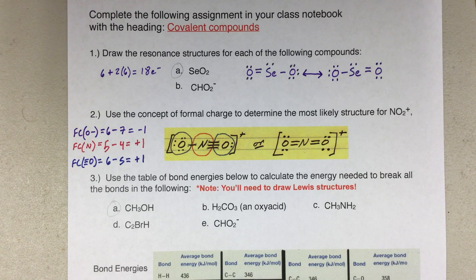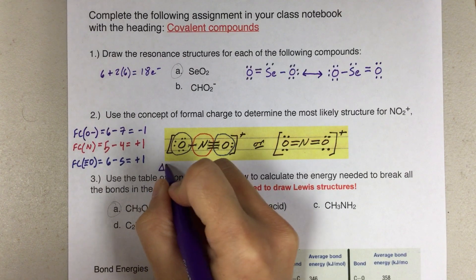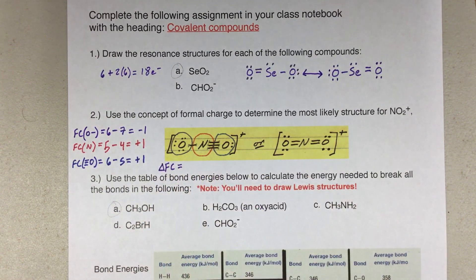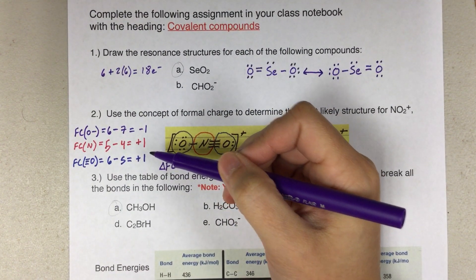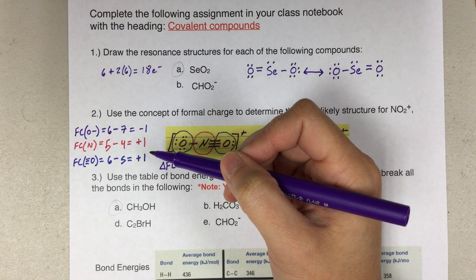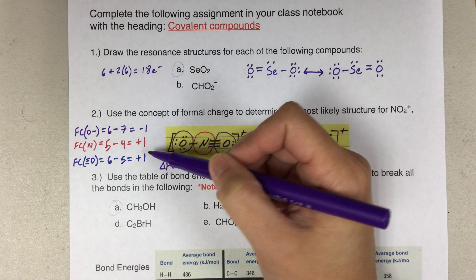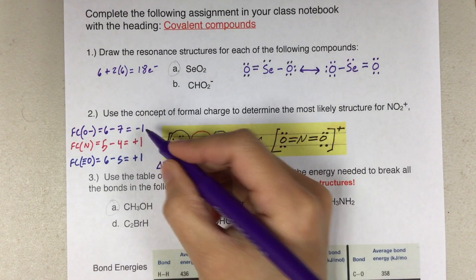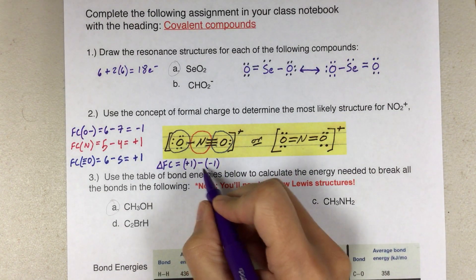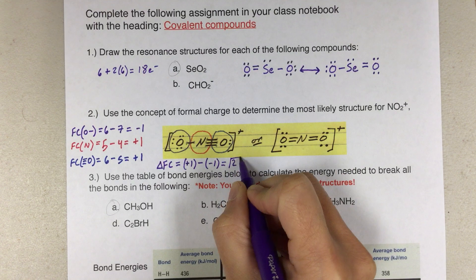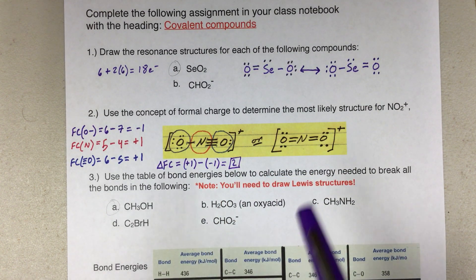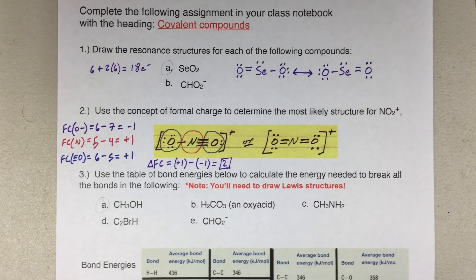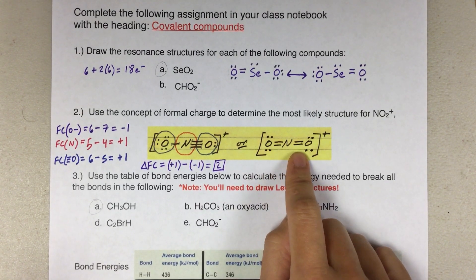Now that we have the individual formal charges for each atom in this structure, we need to calculate the delta fc. Delta fc is the last step: take the maximum number you calculated and subtract the minimum number. The maximum here is positive one, and the minimum is negative one. So 1 minus (−1) equals 2. We'll use this number to compare against the other structure's delta fc.